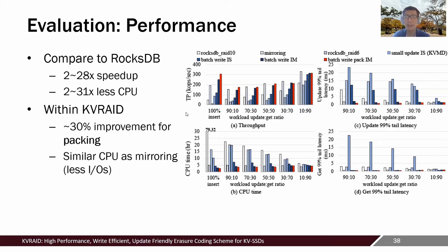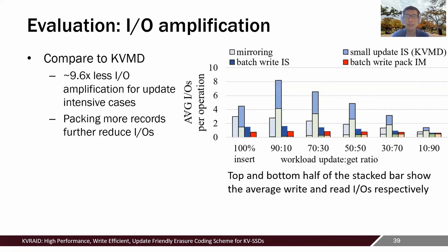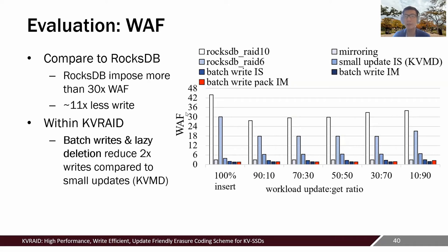Among KV-RAID optimizations, packing buys around a 30% improvement for writes. For IO amplification, our approach can reduce it by almost 10 times for update-intensive workloads compared to KVMD and StripeFinder. Packing more records together can further reduce IOs. Note that KVMD and StripeFinder cannot pack logical records due to their design. For write amplification, LSM-tree incurs lots due to compactions, and even more when RAID is enabled. KV-RAID reduces write amplification by around 11 times compared to RocksDB, and by 2x compared to in-place update approaches such as KVMD.